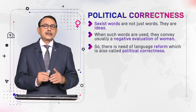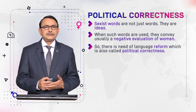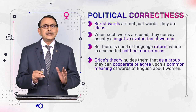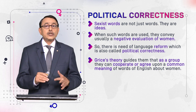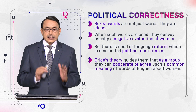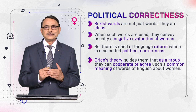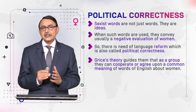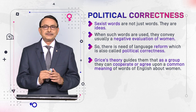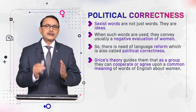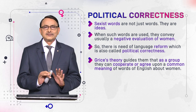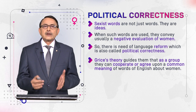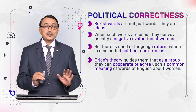How can women do this correction? Women and their representatives — feminist activists — can use Grice's theory. It guides them that as a group, through agreement, they can cooperate, and with the help of this cooperation and agreement, a common meaning of words with positive evaluation of women can be generated.